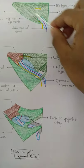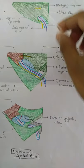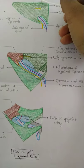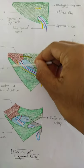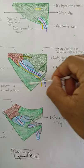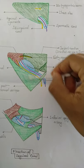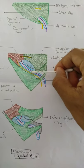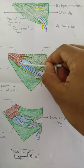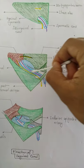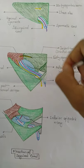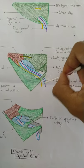This is the anterior wall of the inguinal canal. If we reflect this layer — the deflected layers of the aponeurosis of the external oblique — we can see the whole spermatic cord passing through the canal.